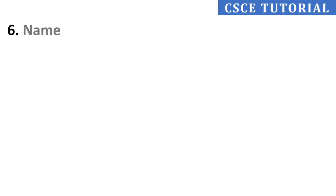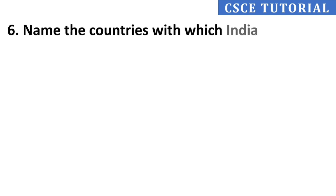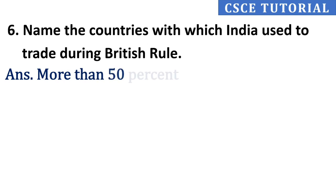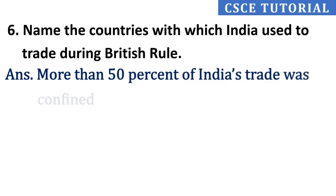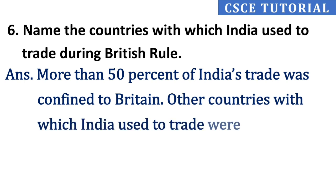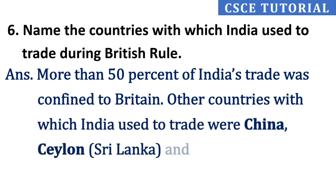Sixth question: Name the countries with which India used to trade during British rule. Its answer is, more than 50% of India's trade was confined to Britain. Other countries with which India used to trade were China, Ceylon (Sri Lanka), and Persia, i.e., Iran.